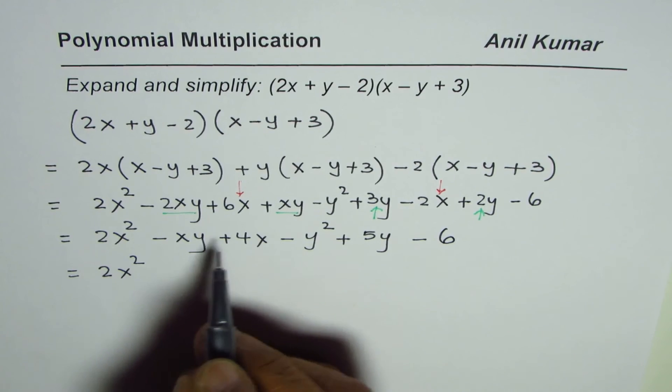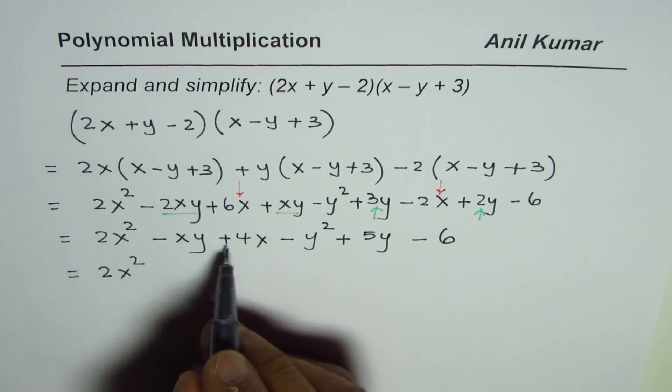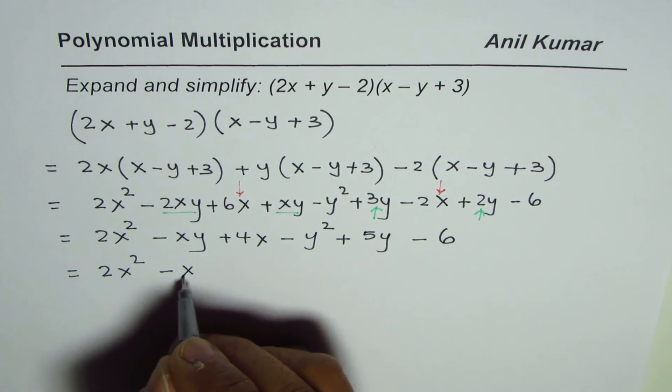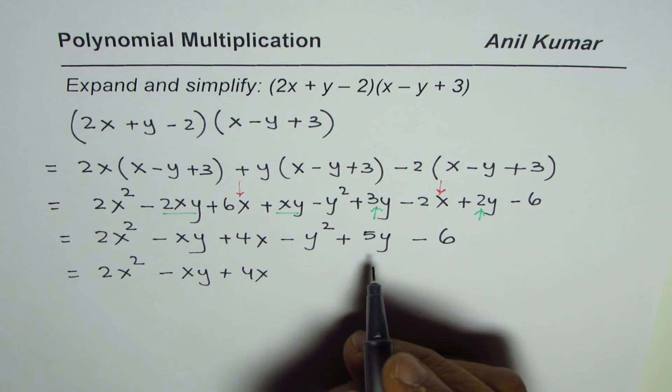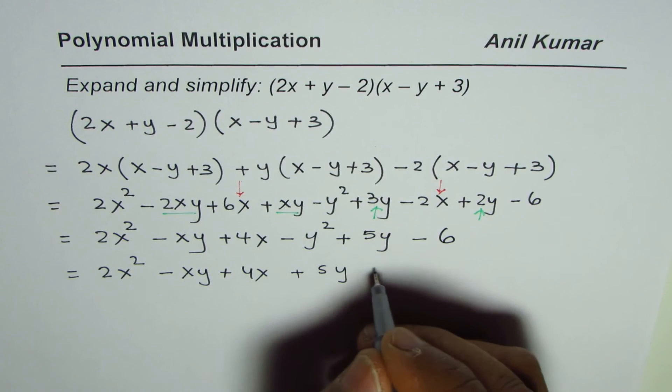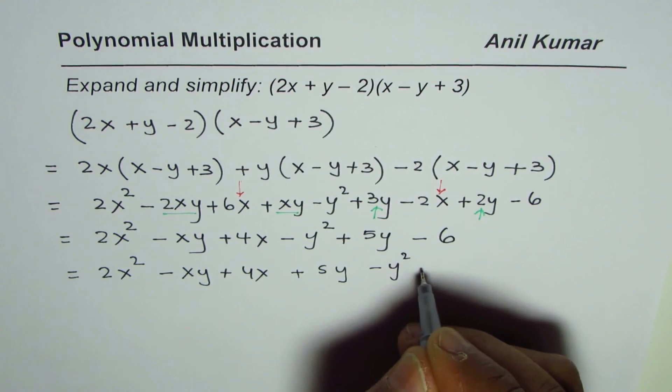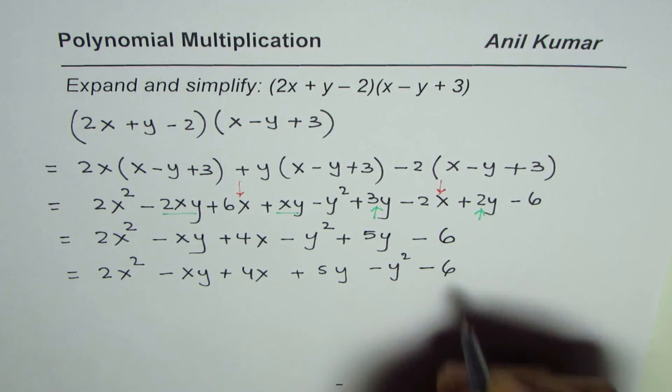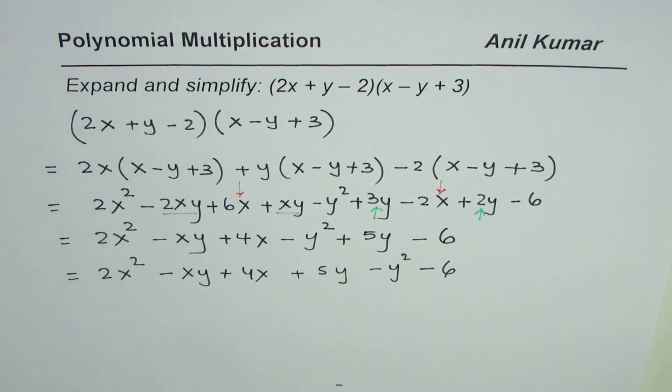Powers of x are here. We will write this as -xy + 4x. And then we will write +5y - y² - 6. Constants may come at the end. That is how we expand and simplify the product of two trinomials.